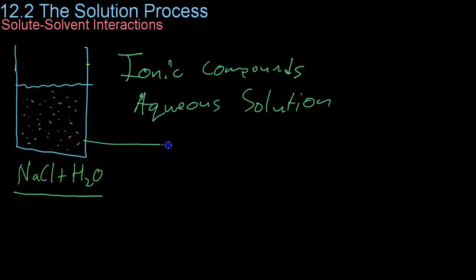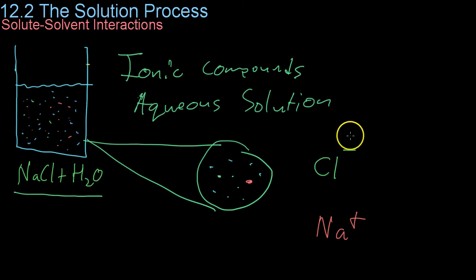Now if we blow up this picture, you'll notice that in the solution there are some sodium ions, some chlorine ions. And there's water. What will tend to happen is because these ions are charged, for example we have negative chlorine and positive sodium, and because water is polar, it will tend to put its charged ends towards each ion.